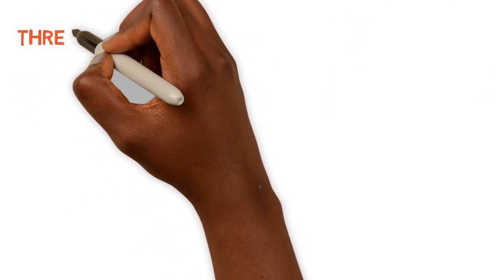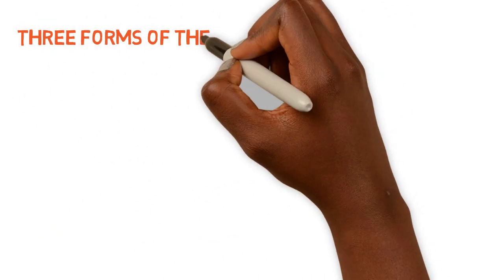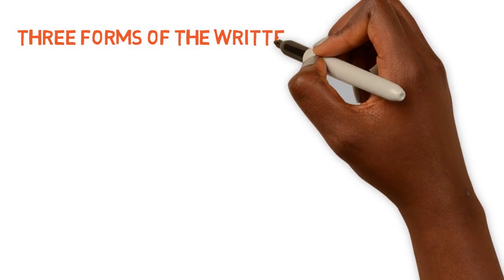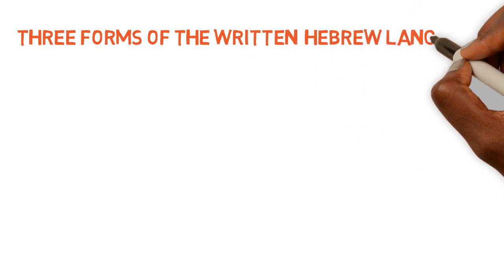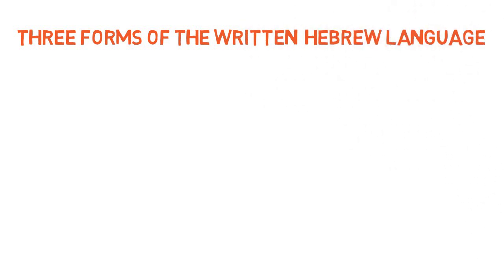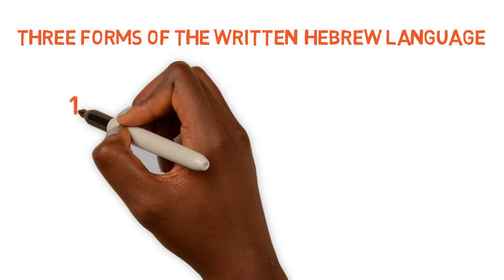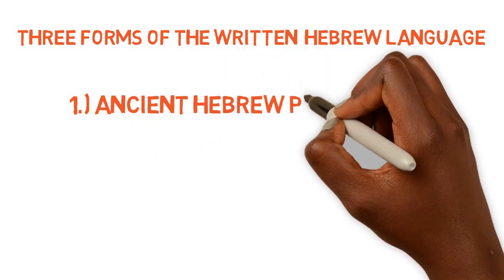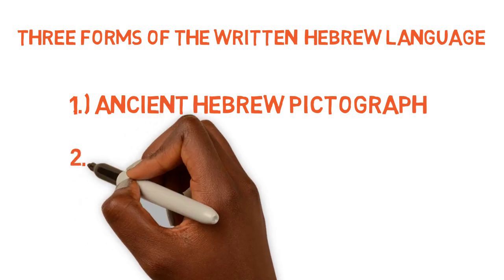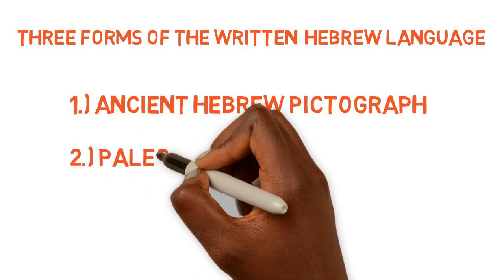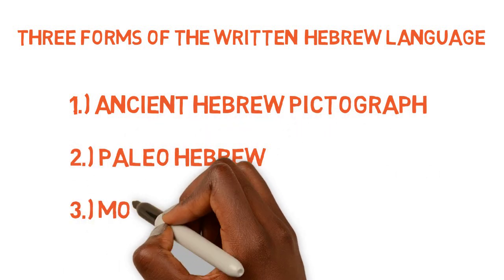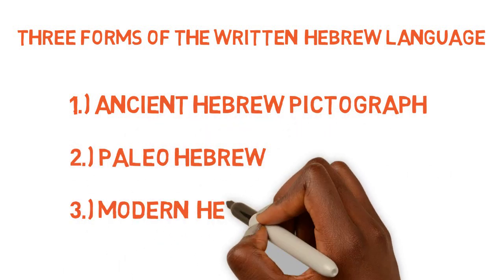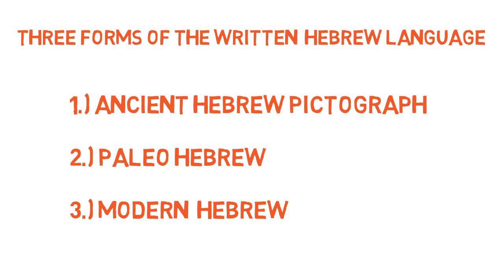We will go over the three main forms of the written Hebrew language. We will go over the ancient Hebrew pictograph, the Paleo Hebrew, and a little bit about the modern Hebrew so that we are able to trace the modern Hebrew back to the pictograph and Paleo Hebrew.